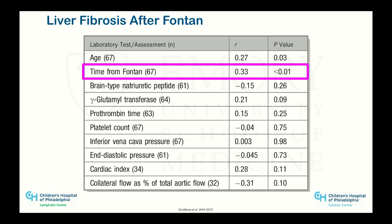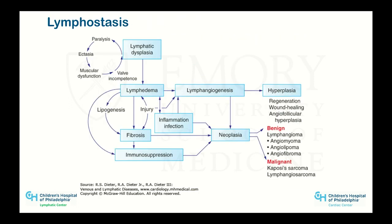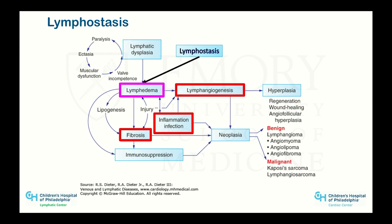What did pan out is that time from Fontan — or time from right-sided heart failure — does correlate with the degree of liver abnormalities. I think this is related to the lymph system, because long ago people working with lymphedema knew that edematous wet tissue will be fibrotic.